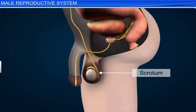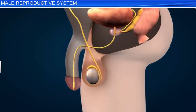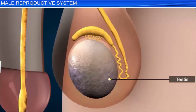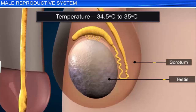The scrotum lies between the penis and the anus. The testes need to be at a temperature of 2 to 2.5 degrees less than the body temperature to produce sperms. Hence, the scrotum is outside the body and has a temperature lower than the body.